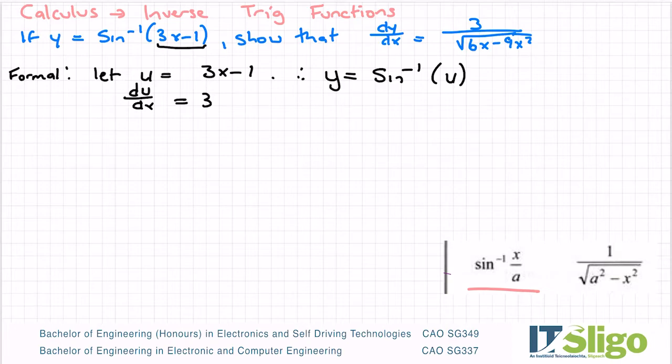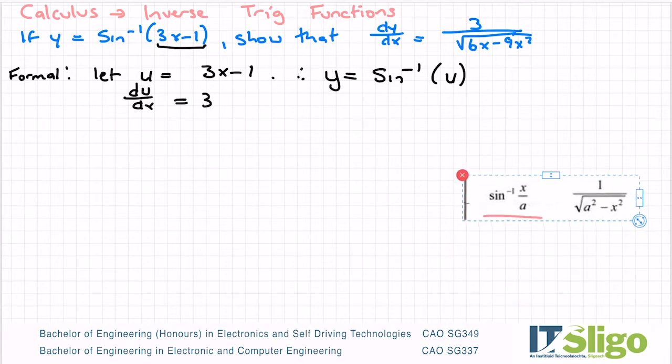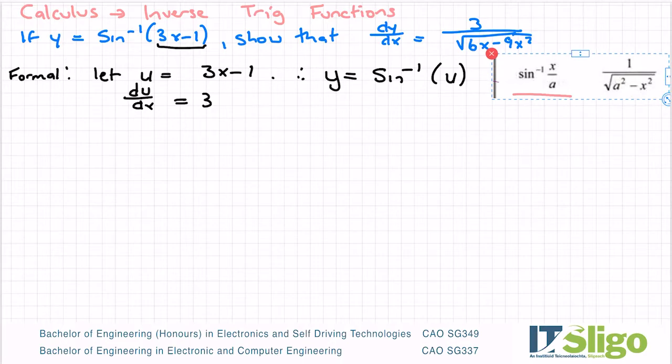So what have I done there? This function here, I have let u equal to 3x minus 1. And therefore I've rewritten this as the sine inverse of u. So now if we differentiate it using what was in the log tables, I would get dy/du now. Why is it called u? Because I'm differentiating with respect to u. I'm still differentiating the y function, that's why it's called dy. It's with respect to u, so it's called dy/du.